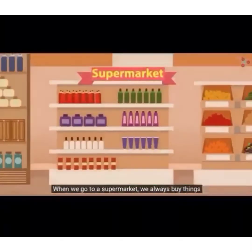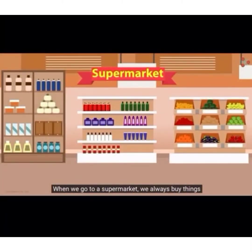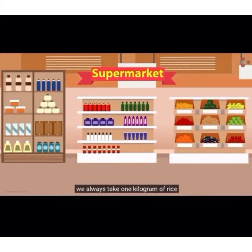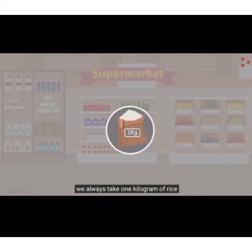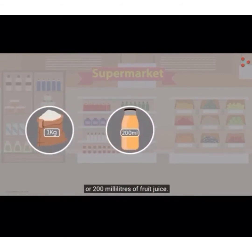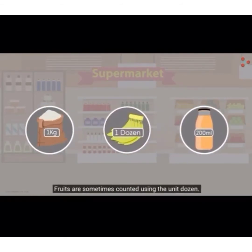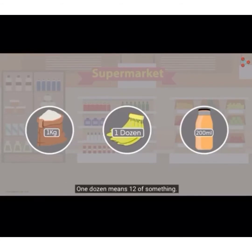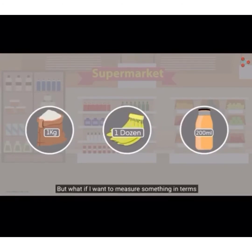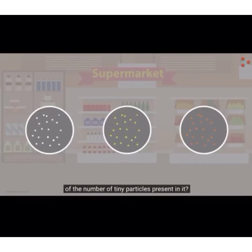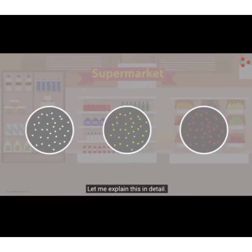When we go to a supermarket, we always buy things using standard values. In other words, we always take 1 kilogram of rice or 200 milliliters of fruit juice. Fruits are sometimes counted using the unit dozen — one dozen means 12 of something. These are terms used in everyday life. But what if I want to measure something in terms of the number of tiny particles present in it? Let me explain this in detail.